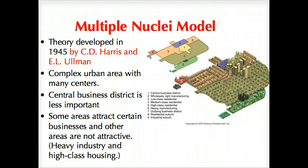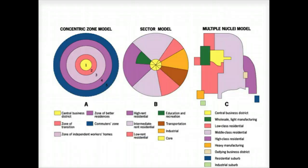To briefly recap: the three models you should be aware of for U.S. city development are the concentric zone model or Burgess model, the sector model or Hoyt model, and the multiple nuclei model.